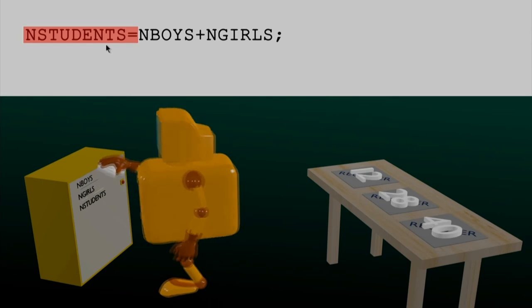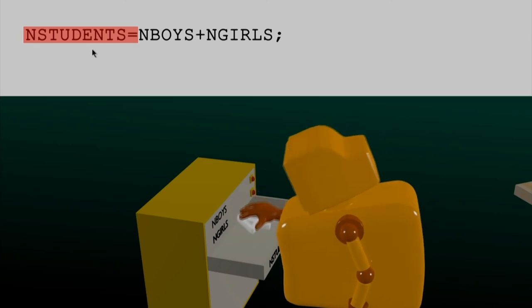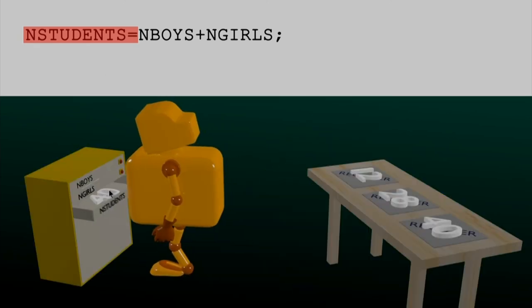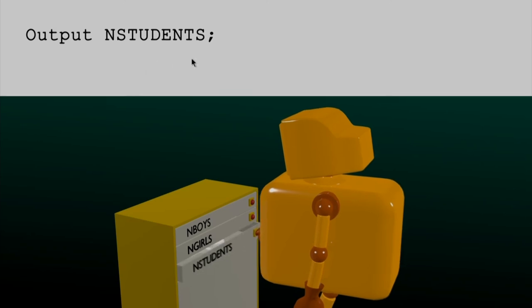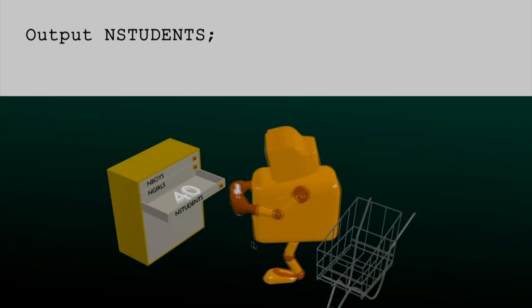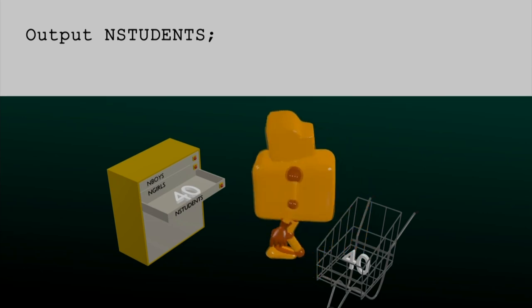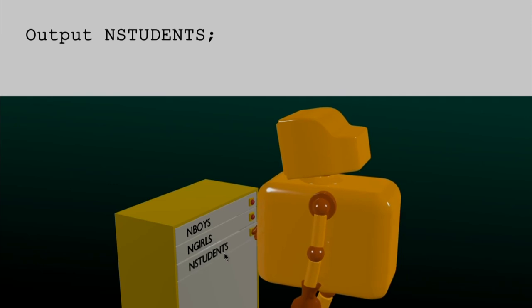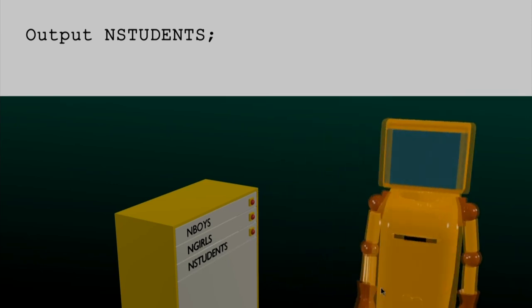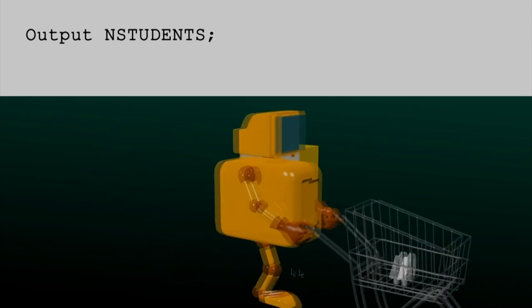Now he looks at the left-hand side of the assignment operation and knows he has to put the result into n_students. So the new value 40 is inserted in the location for n_students. Finally he has to execute the output instruction: 'output n_students.' He opens the drawer, makes a copy of the value 40 — notice he is taking something out, which always means copying the value while leaving the original inside. He takes this value 40 and brings it back to us as the output. This completes the execution of the program by Mr. Dumbo.